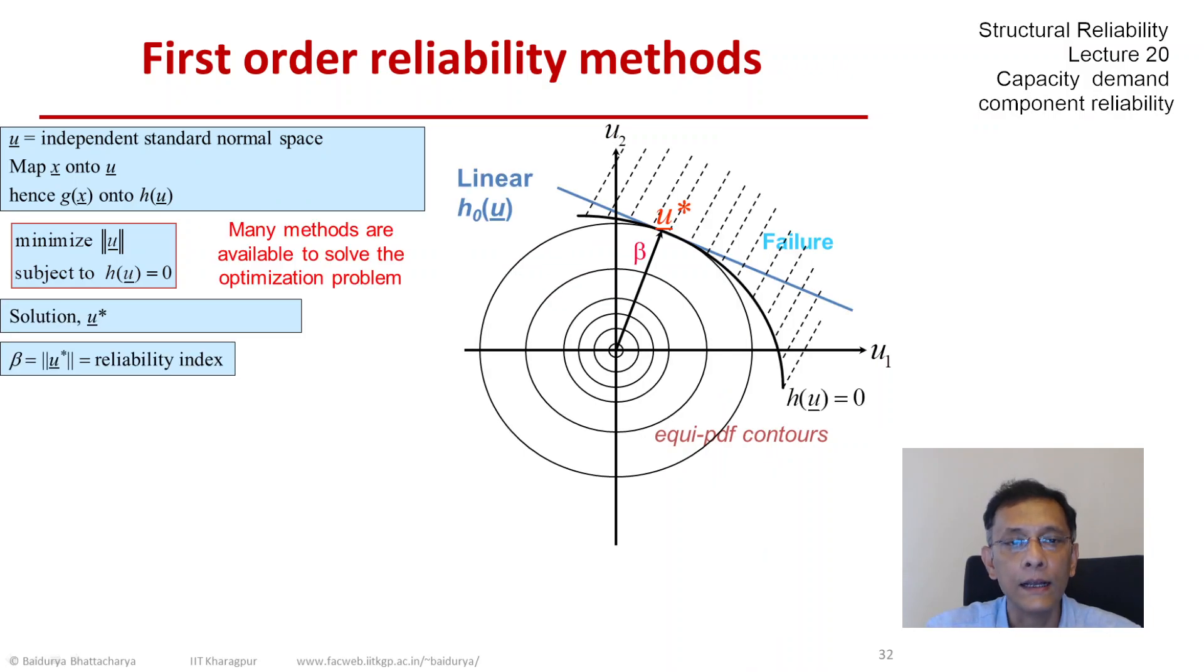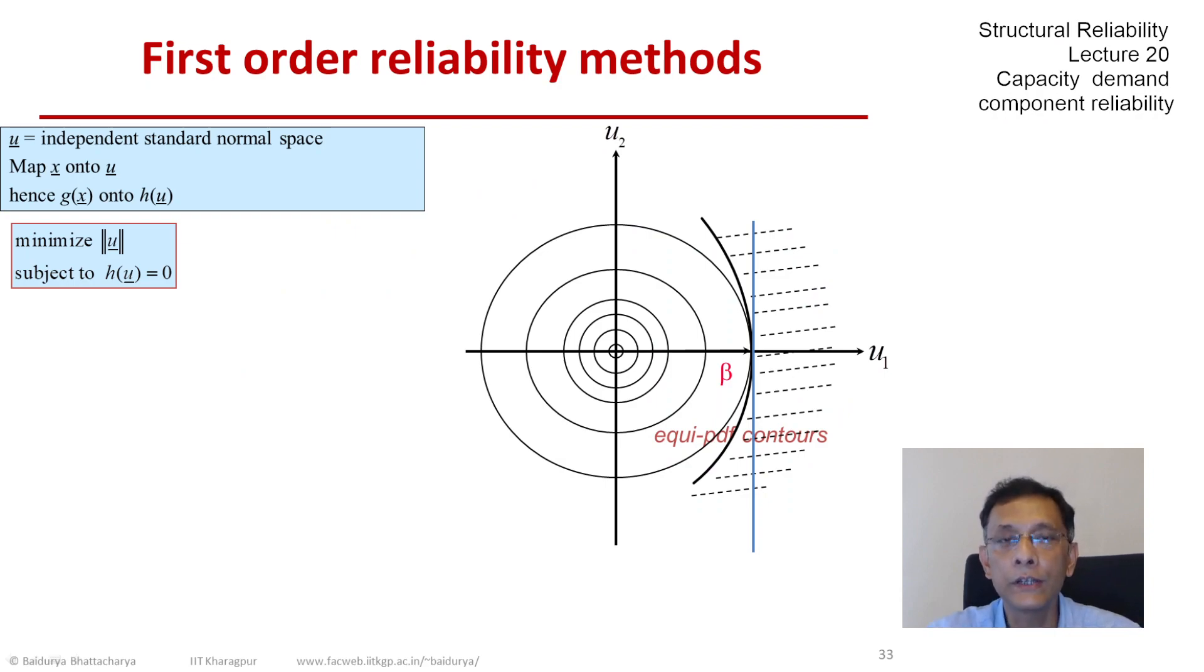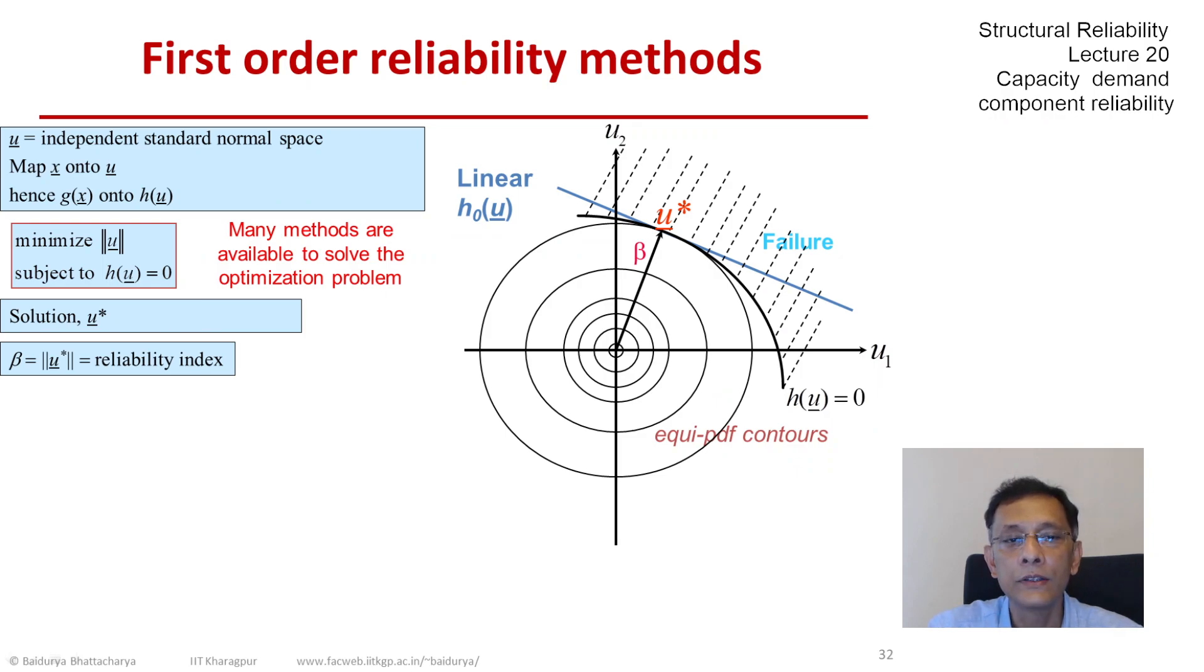That is a very useful and a very helpful, a very simplifying property of the space. This is where we were, this was my minimum distance point. The probability content of that shaded region is identical to the probability content of this shaded region, or the probability content behind the linearized blue line is the same.